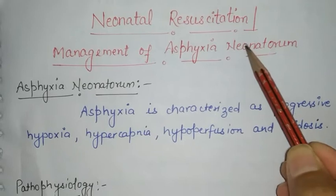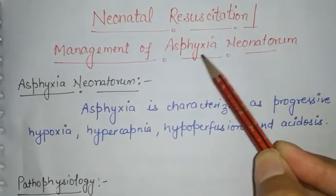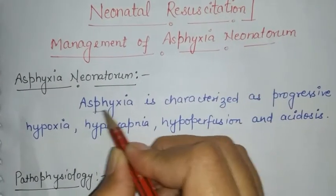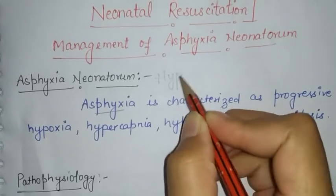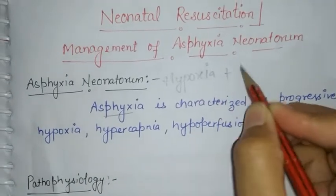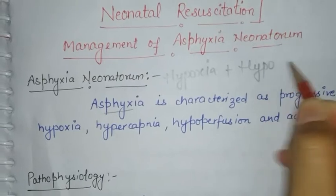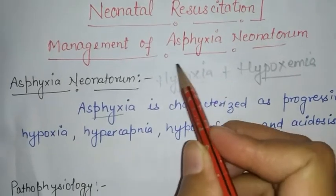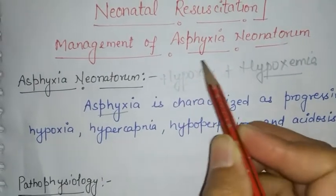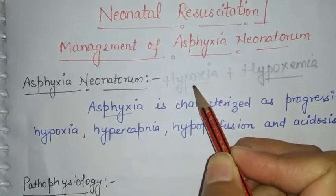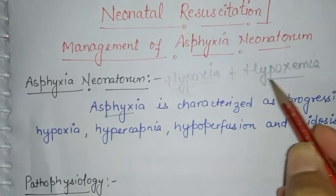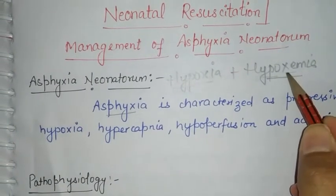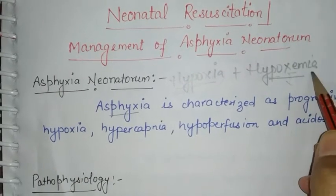Asphyxia neonatorum refers to difficulty in breathing in neonates. It includes two terms: hypoxia and hypoxemia. Hypoxia means decreased or lack of oxygen in the tissues, while hypoxemia means decreased or lack of oxygen content in the blood.